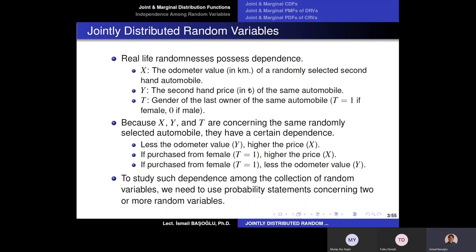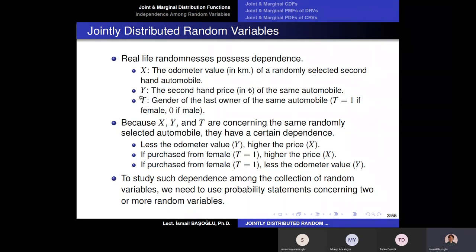Even if you do not know the odometer value or the second-hand price of that automobile, what you know is this: if the odometer value is larger, the second-hand price is going to be lower. So there is a dependence between the second-hand price and the odometer value. Now, T is a third random variable — the gender of the last owner. T equals one if the last owner is female, and zero if the last owner is male. So T is a Bernoulli random variable.